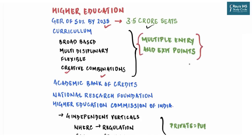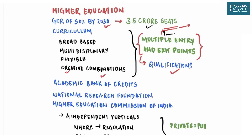The policy will also allow for multiple entry and exit points into our higher education system. Currently, entry into any academic stream requires certain qualifications — for example, studying technology requires mathematics in higher secondary — creating a tunnel where missing an entry point denies all future opportunity in that field. The government is going to enable multiple entry and exit points to address this rigidity.